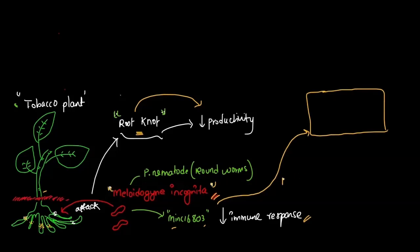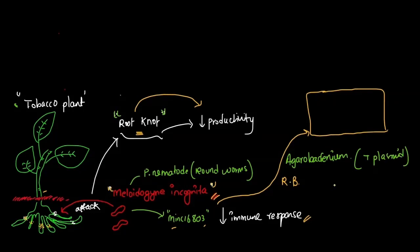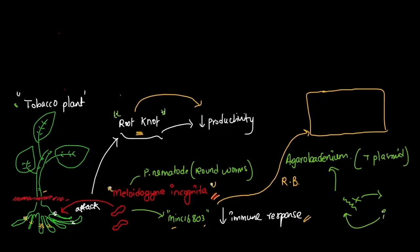So for that, we have to transfer this gene to the plant by a technique called recombinant biotechnology. For that we need a vector, and in this case we use Agrobacterium. This Agrobacterium has a special plasmid called T-plasmid. First, we have to disarm this pathogen, because the T-plasmid of this bacteria can cause tumor to a plant. So before using this Agrobacterium as a vector, we take out the harmful gene and in its place insert our gene of interest — which in this case is Mink 16803.